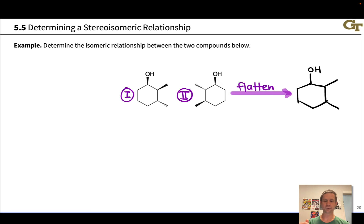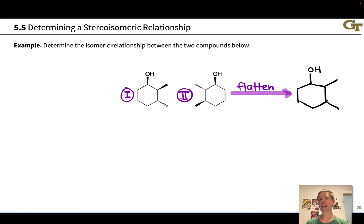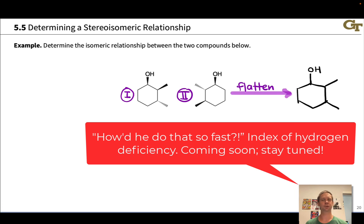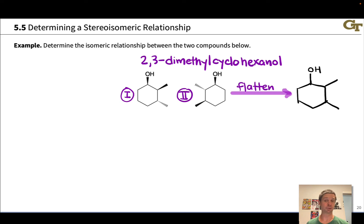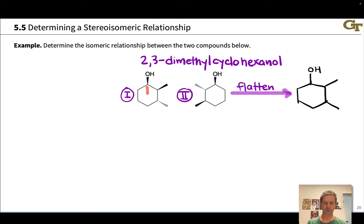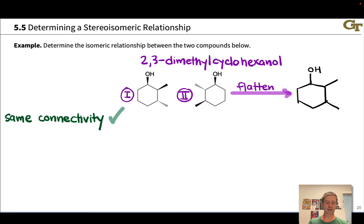If we ignore the wedges and dashes and flatten the structures, we get a structure we can name. Using IUPAC nomenclature, this compound is 2,3-dimethylcyclohexanol — and that's also the name of compound 2. So both compounds have the same connectivity.